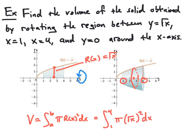So we have the integral from 1 to 4 of pi times the square root of x squared, which of course simplifies to the integral from 1 to 4 of pi x dx.